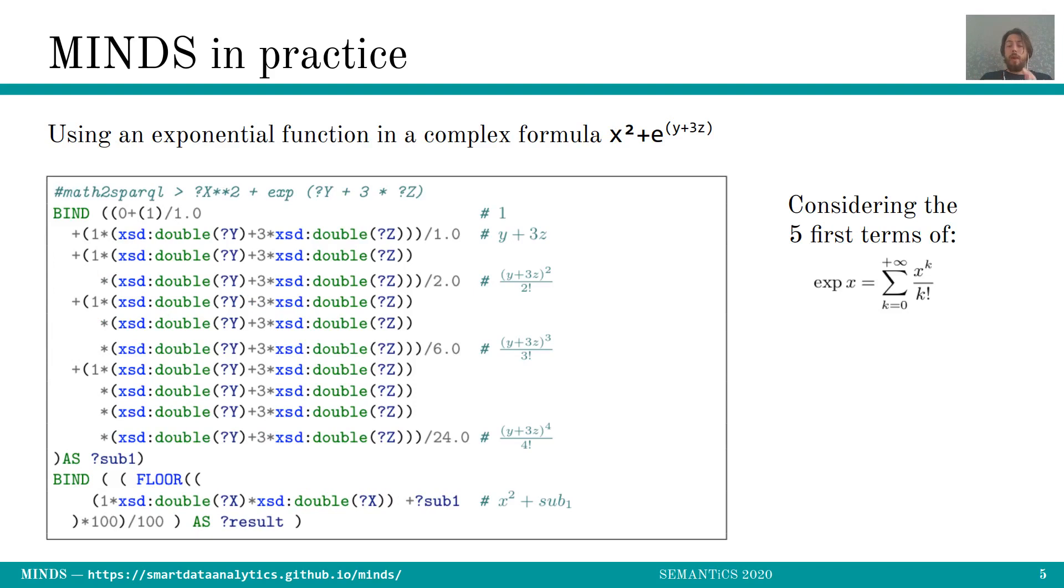Now having a look at a more complex example, x square plus exponential of y plus 3z. Then you can see that MINDS is actually breaking into pieces the expression, identifying the y plus 3z as a common block. So that's why you can see on the left hand side a block of y plus 3z that are repeated everywhere. And then MINDS is seeing that it would require to compute that formula to have an approximation of the exponential using its decomposition in series. So I'm representing here the first five terms.